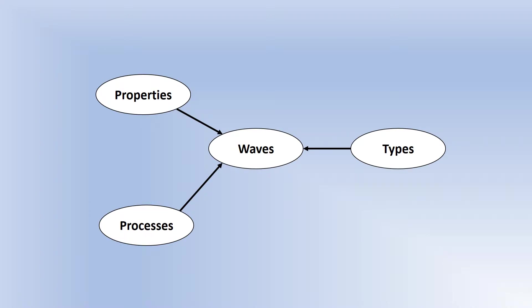This is the first video looking at the waves topic. I'm going to break it into three key areas: the things you can measure about a wave, which we call the properties of a wave — and that's what I'm going to focus on in this video — then the different types of waves, and finally the processes that can happen to a wave, such as refraction and all of those other processes that go with it.